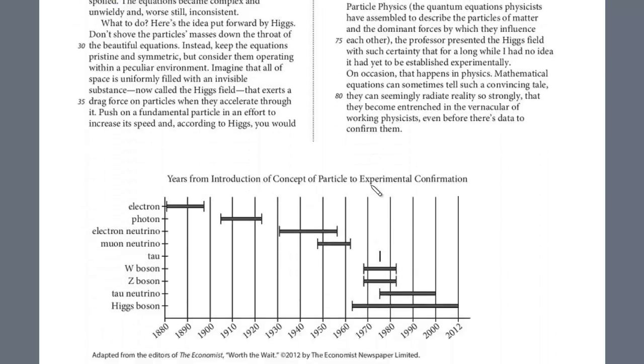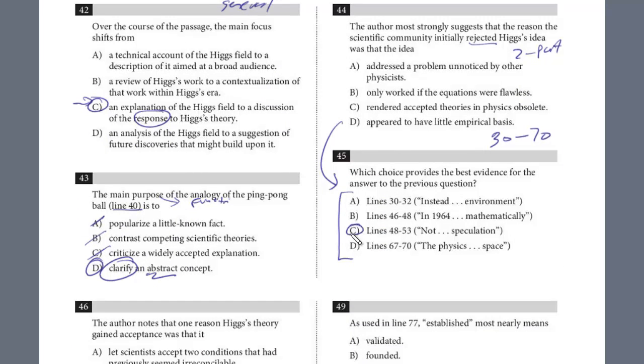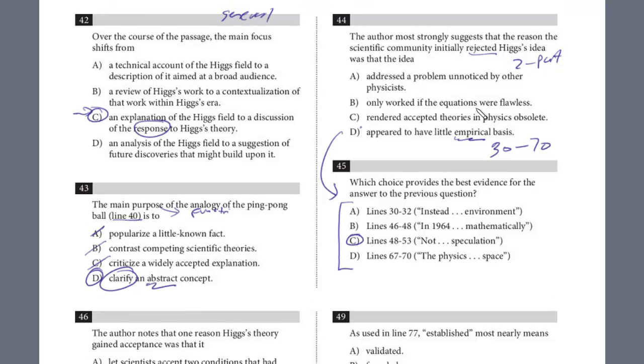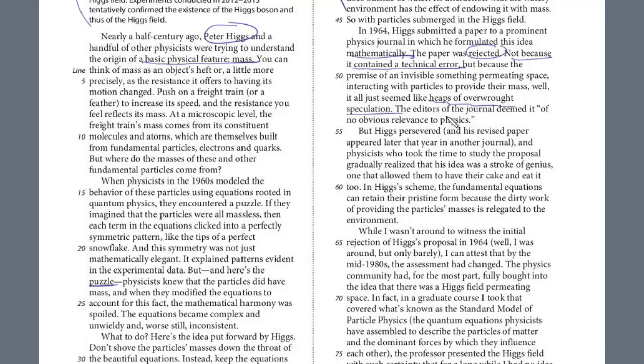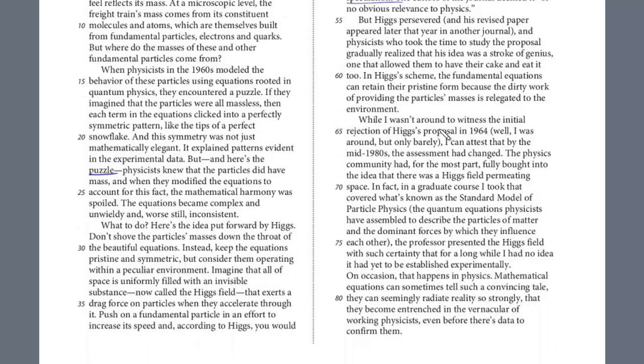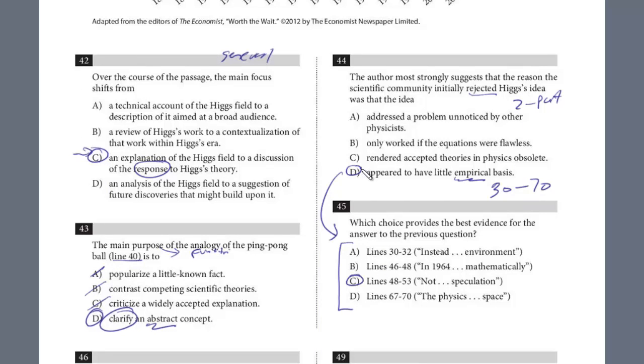And let's look for the answer. All right, so we definitely think it's C for the evidence. And then what's the answer for 44? It had little empirical basis. Empirical means really based on evidence or can be observed. And it said it was, if you look back, let's just go read this again, where it said it was just overwrought and with speculation. So they're stating that it was just based on theory. There wasn't any evidence to confirm it. There was no empirical basis. And so that was a two-part question. It is D and C.